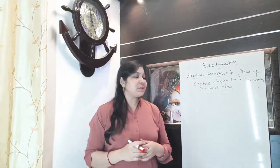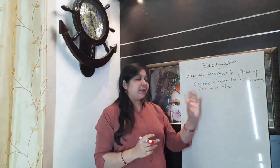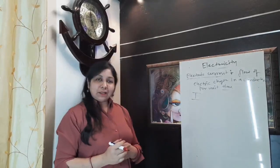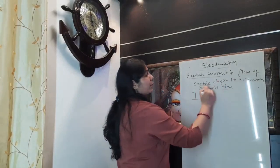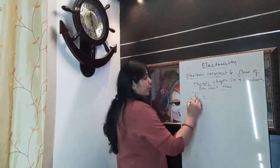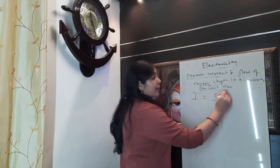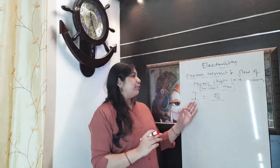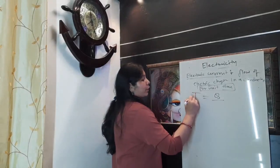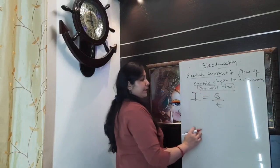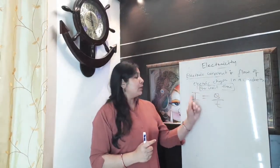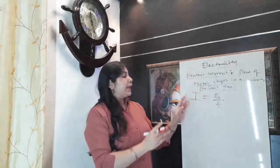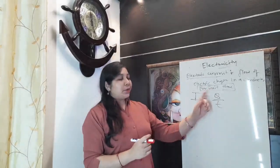Conductor — you can take metal of course. Electric current is the flow of electric charges in a conductor per unit time. Electric current is represented as I. The formula is I is equal to Q by T. Q is charge and T is time. When you are moving charges through a conductor per unit time, it is defined as electric current. That's why the formula of electric current is I is equal to Q by T.